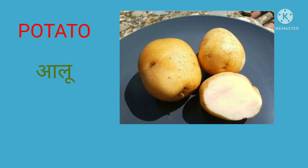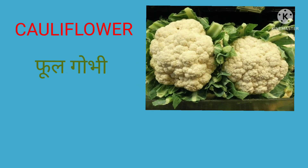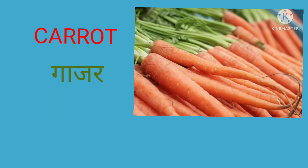This is potato, in Hindi it's called aloo. This is cauliflower, in Hindi it's called phool gobi. This is cabbage, in Hindi it's called patta gobi. This is carrot, in Hindi it's called gajar. It comes in orange, red, and black varieties.